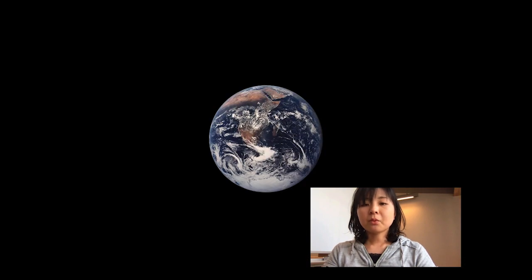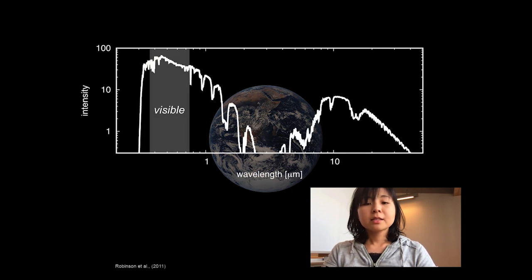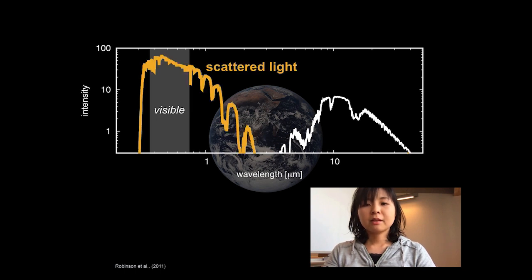For example, if you observe an Earth twin, this is the overall spectrum you would get. At shorter wavelengths, the planet illuminates by scattering the light from the host star. And its broad features depend on, for example, surface composition, atmospheric pressures, and clouds.